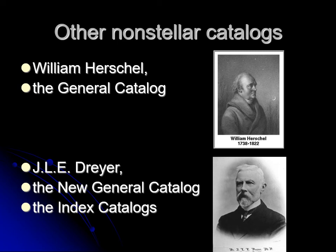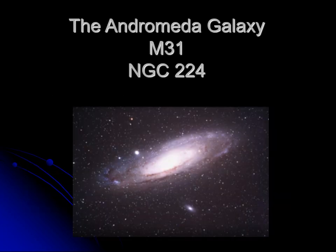Those additional objects were put into the Index Catalog, which serves as an addendum to the NGC. So on your star chart you might see something labeled M for Messier, GC for General Catalog, NGC for New General Catalog, or IC for Index Catalog.